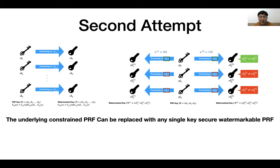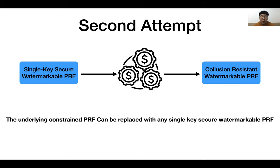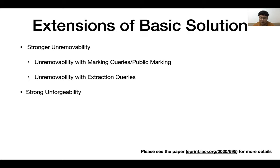Note that in the construction and the security proof, we don't rely on concrete properties of the underlying constrained PRF, and it is safe to replace it with any single-key secure watermarkable PRF. So our construction in fact provides a compiler that upgrades a single-key secure watermarkable pseudorandom function into a collusion-resistant one. This is our basic idea on how to construct a collusion-resistant watermarkable pseudorandom function from standard assumptions.